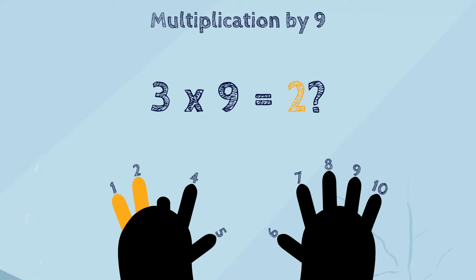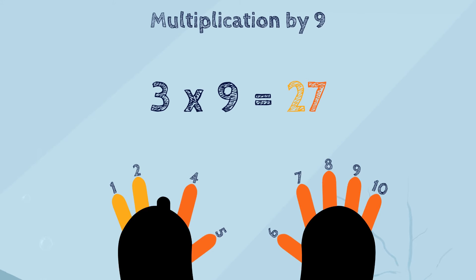Now, let's count the number of fingers to the right of the folded finger. That will be the second digit in the answer. There are 7 fingers to the right, 2 fingers on the left hand, and a whole hand of fingers on the right. So, we put the 7 in the 1's spot. As a result, we have found that we know what 9 times 3 is. It's 27.